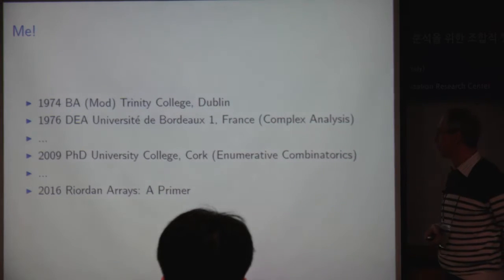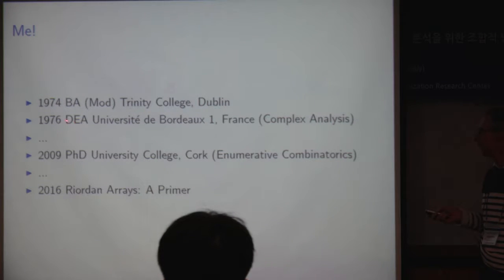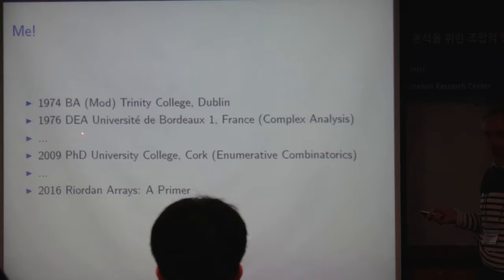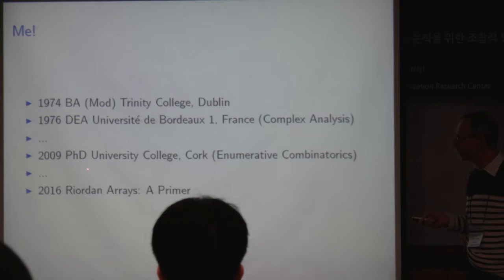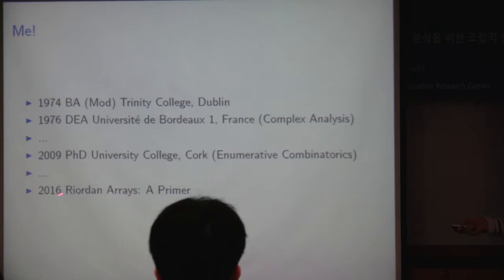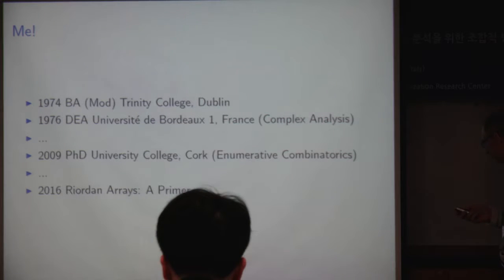A little bit about me: I did my degree in 1974, a diploma in Bordeaux in 1976, and then went to work. So I'm a relatively new person to active mathematics — I got my PhD in 2009. Some of you may feel you should be intimidated by me, but not at all; I'm intimidated by you. Just to mention that this year I've written a book on Riordan arrays — it's for the novice, not for practiced people like yourselves.